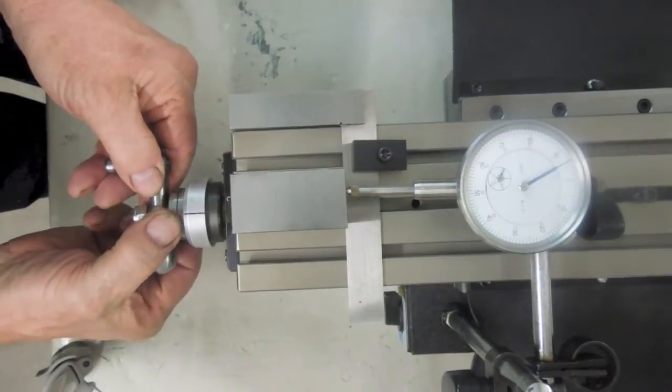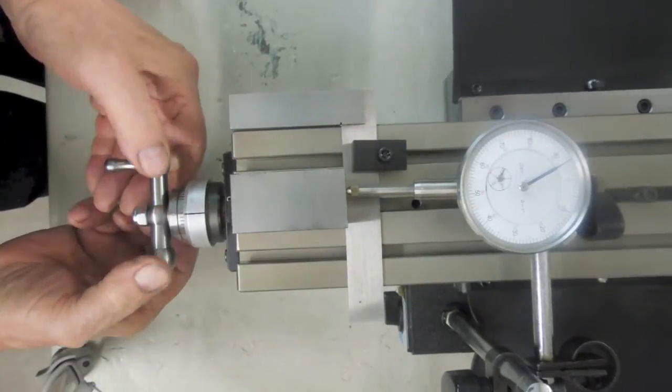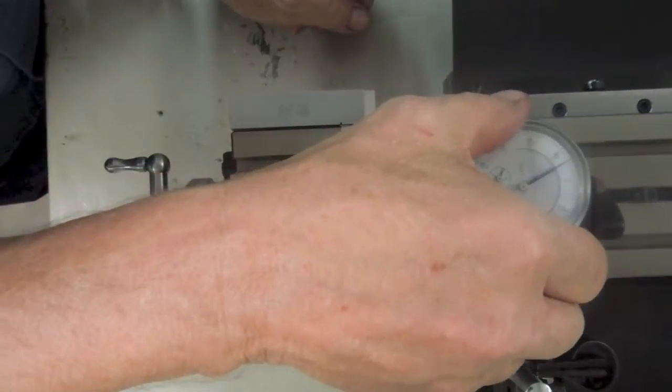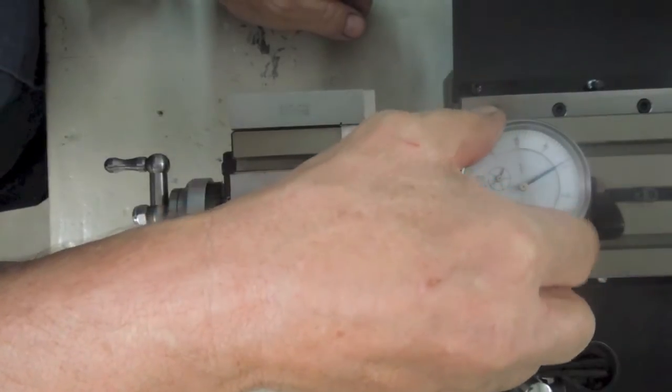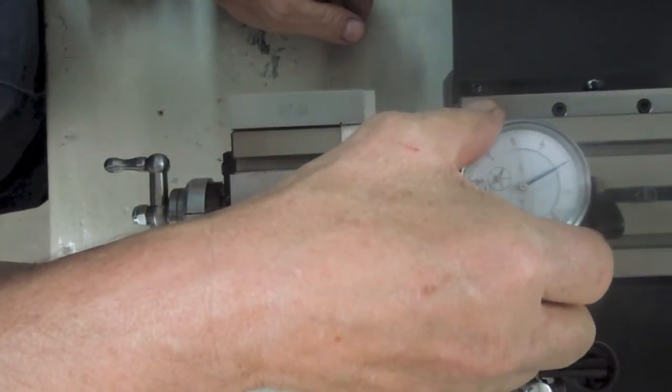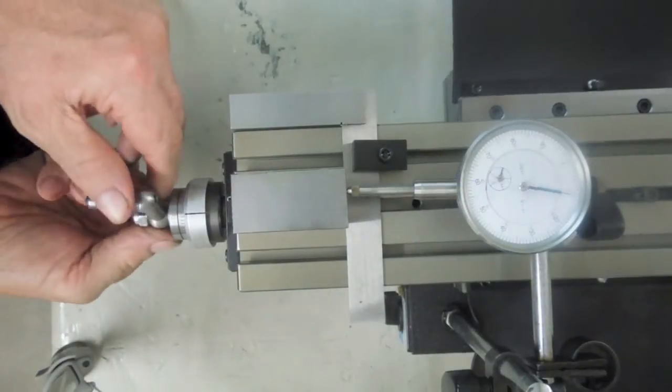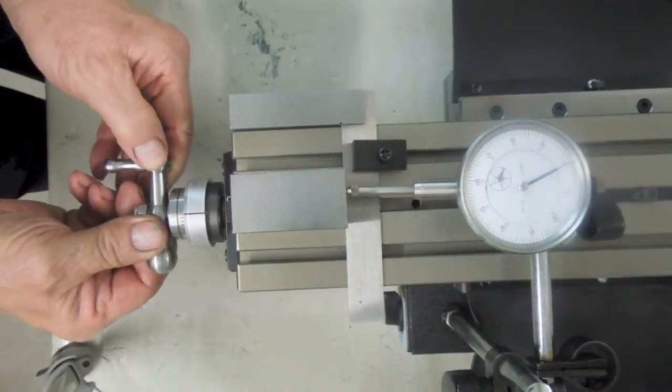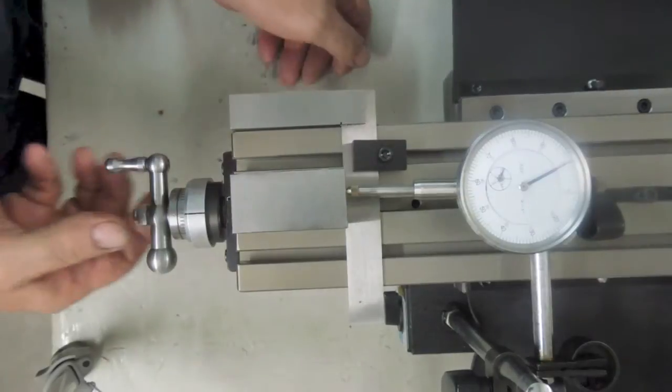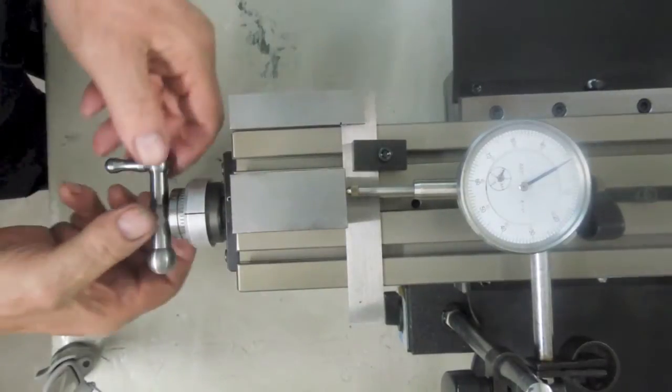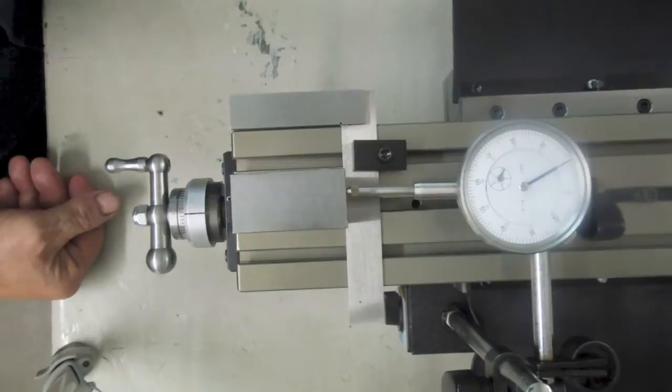We're going to adjust our dial to zero. Then we're going to adjust our dial indicator to zero. So now the backlash is out and we have our indicator and our dial set to zero.